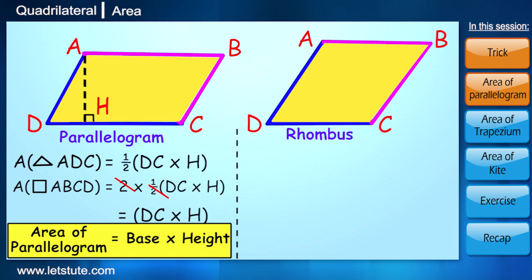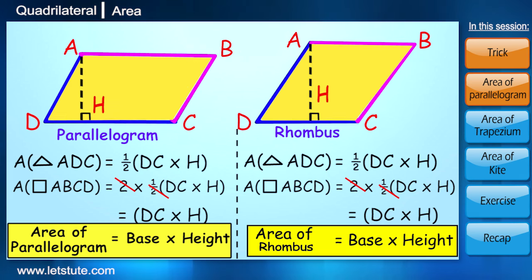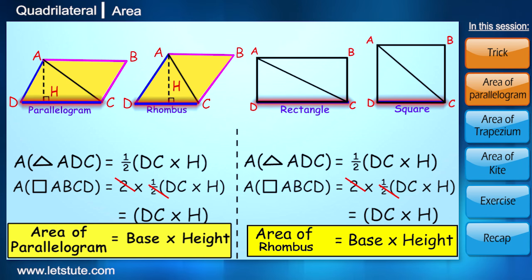Where DC is base and h is representing the height. For rhombus as well, we'll get the same formula. In fact, area of all members of this family can be found by using the same formula, because every member of this family can be divided into two congruent triangles. So area of all members will be base into height.